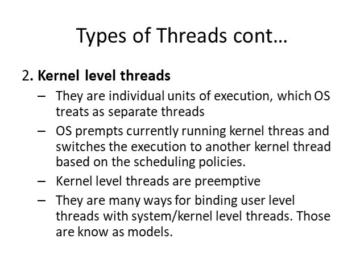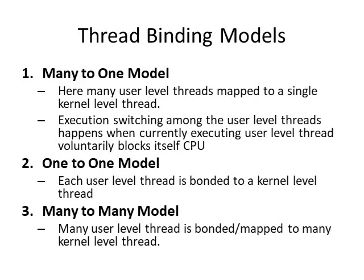There are many ways of binding user-level threads with kernel-level threads. We have three different binding models called thread binding models — how we can bind a user-level thread to a kernel-level or system-level thread. The first model is the many-to-one model, where many user-level threads are mapped to a single kernel-level thread. Because of this mapping, execution switching among the user-level threads will not happen, and the currently executing user-level thread can only switch if it voluntarily blocks itself.